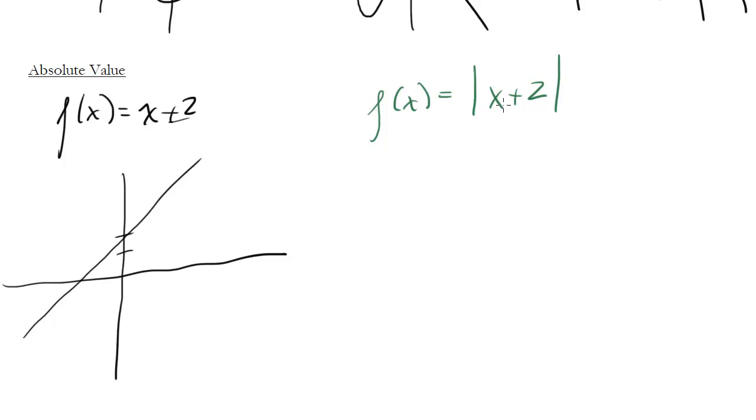What happens when we get x is negative 2, this thing equals 0, absolute value is 0. But how about if we plug in negative 3? Well, negative 3 plus 2 is negative 1, but then we absolute value ties it and it becomes positive 1.